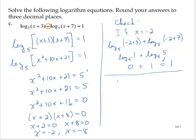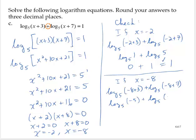Let's check if x equals negative 8. Then I would have the log base 5 of negative 8 plus 3 plus the log base 5 of negative 8 plus 7. And so that would give me the log base 5 of negative 5 plus the log base 5 of negative 1. And here I'm in trouble. I cannot evaluate the logarithm of a negative number. So therefore negative 8 is not a solution.